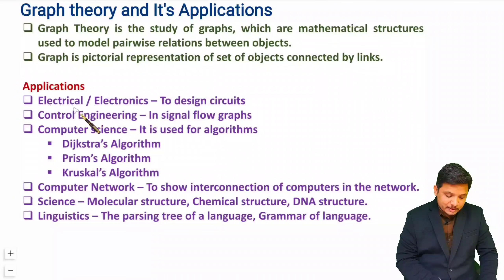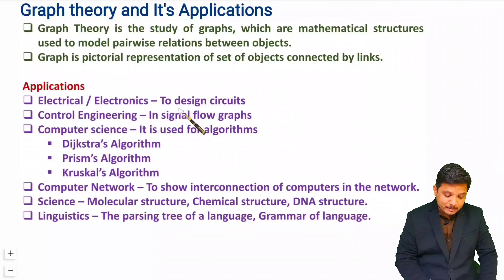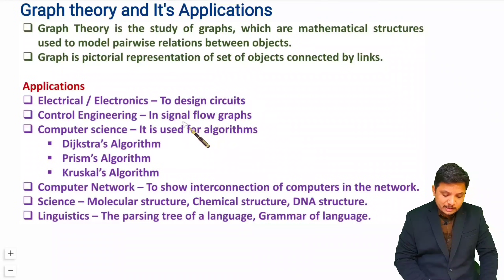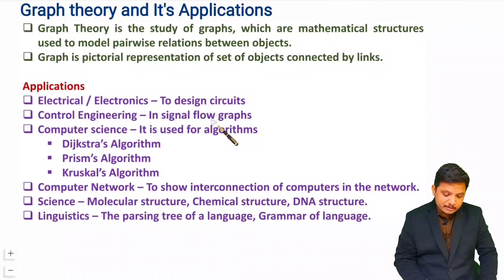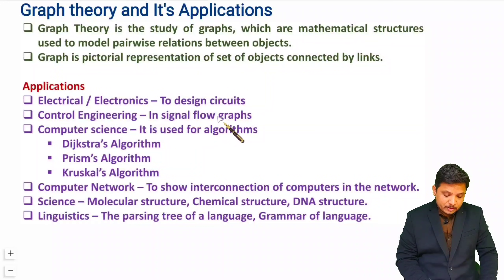In electrical and electronics, we use graph theory to design circuits — I'll explain how to design circuits using graph theory in this network theory playlist. In control engineering, we use signal flow graphs, which are used to identify the transfer function of a system by observing how connections exist between nodes and determining the final transfer function of the connected system.